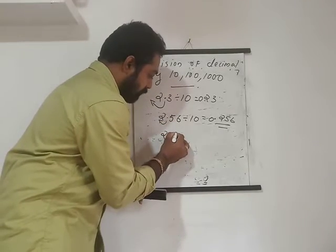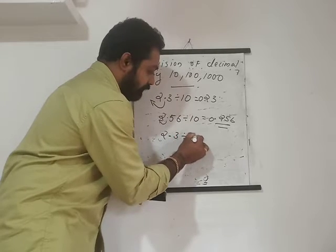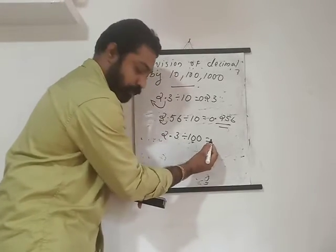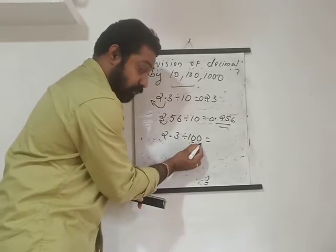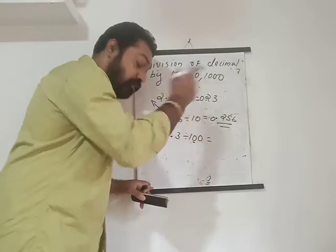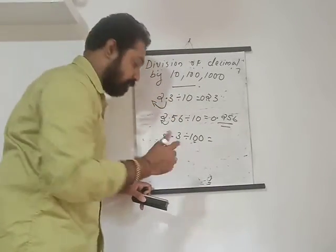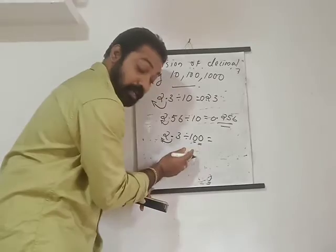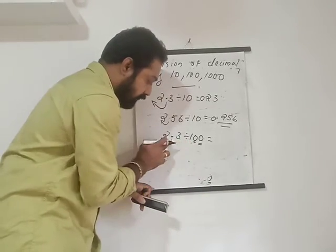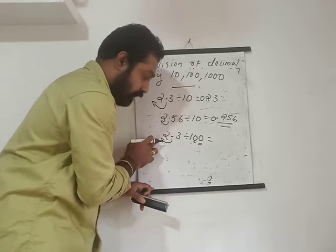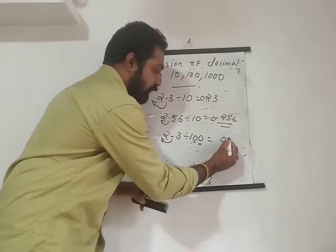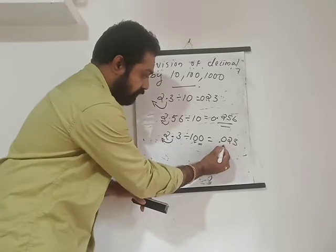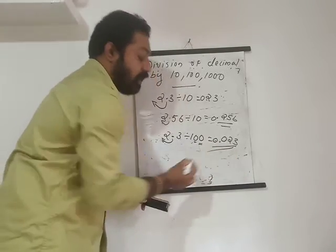Now, 2.3 divided by 100: first the point moves one decimal place to the left — but there is no other digit there, so we need to put a zero. One zero moves the point one place, giving 0.23, but there is still one more zero in 100. So we put another zero on the left, and the answer becomes 0.023 — two decimal places.